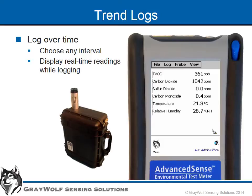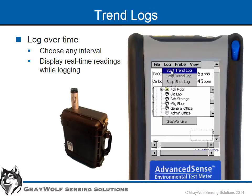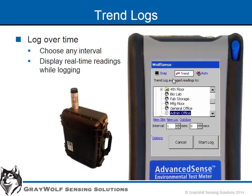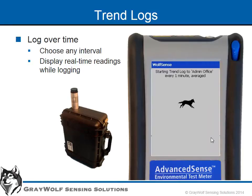Trend logs default to 1 minute sampling intervals, but you can set them up from 1 second to 1 hour intervals, dependent on how much data detail you want. You'll never fill up the memory, even on 10 second intervals — that would take over 10 years. You can set the unit to average readings between intervals, which is the default setting, or to log instantaneous readings.